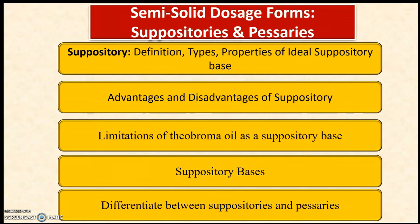The first chapter we are going to see today is semi-solid dosage forms, that is suppositories and pessaries. The important points and questions for your final exam, both theory and practical, are: suppository definition, types of suppositories, properties of ideal suppository base, advantages and disadvantages of suppositories, and what are the limitations of theobroma oil as a suppository base.